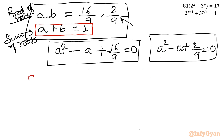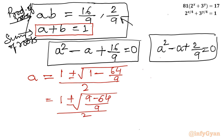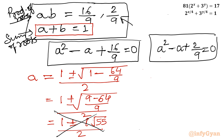Applying the quadratic formula to a² - a + 16/9 = 0: a = [1 ± √(1 - 64/9)] / 2. The discriminant is negative, so complex solutions are generated. The solution involves i√55 / 2. We reject this solution as it gives complex values, not real solutions.